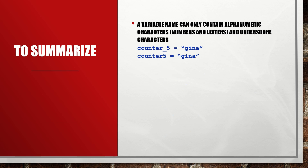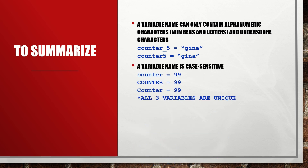A variable name can only contain alphanumeric characters — numbers and letters — and of course the underscore character. A variable name is case sensitive, which means that if we have a variable name called 'counter' all lowercase, and we have another variable name called 'COUNTER' with all uppercase, these two are totally different from each other.